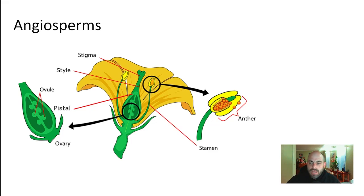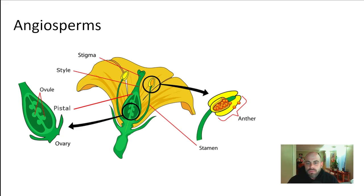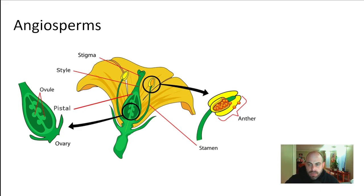And lastly, angiosperms. These are seed-bearing vascular plants that produce flowers and fruit. If you think of a typical plant, it is probably an angiosperm. These are the most widely distributed and most evolutionarily successful plants in the world — they have spread over pretty much every spot on Earth where plants can grow. Flowers and fruit are the key features.